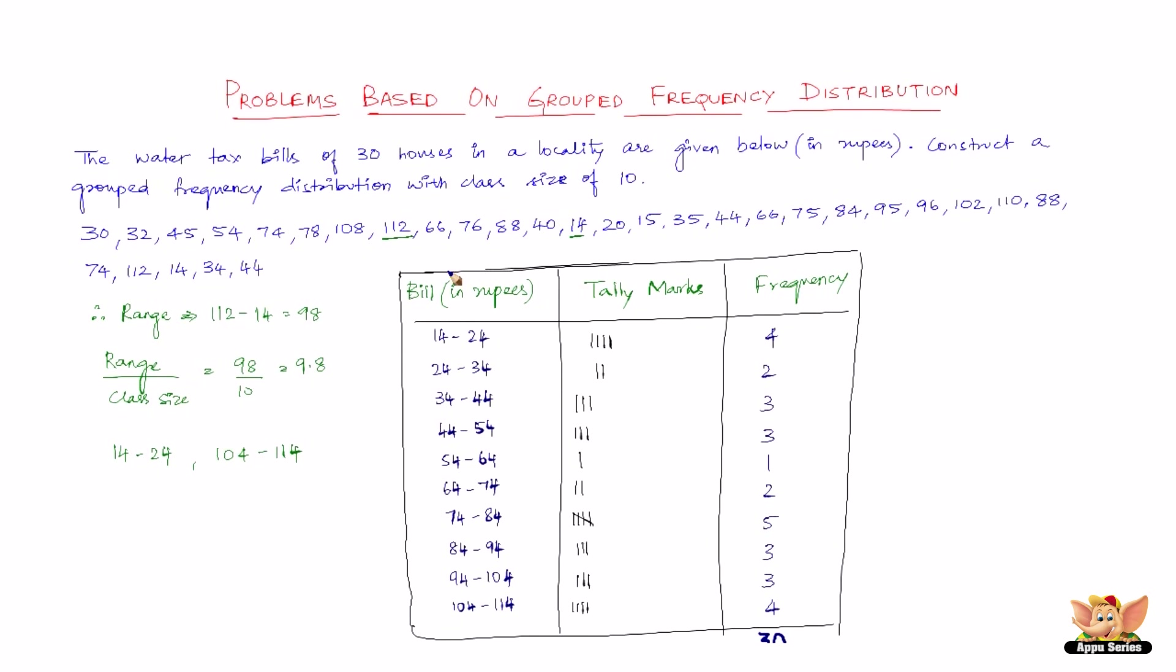So this is the grouped frequency distribution construction using the above raw data. Summarizing in brief: the first step is we need to find out the range, which was 98. The class size was 10. So divide 98 by 10 - we get 9.8. This approximately gives us 10 classes which we list down, then we find the tally marks and the frequency, and hence the grouped frequency distribution construction is done.